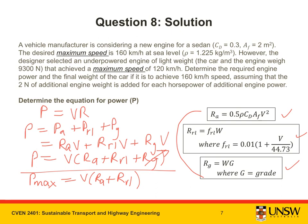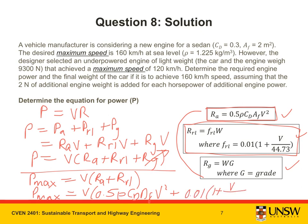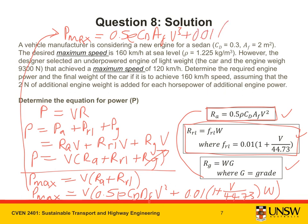We can substitute in R_A and R_RL to get P_max equals V times 0.5ρC_DA_FV² plus 0.01(1 + V/44.73)W. Likewise, this can be expanded again. P_max equals 0.5ρC_DA_FV³ plus 0.01(1 + V/44.73)W. So there we have it, an expression for power.